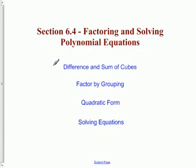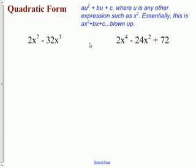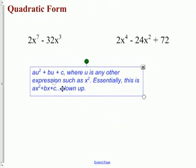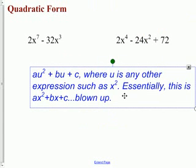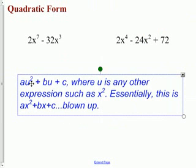In section 6.4 on factoring and solving polynomial equations, the third factoring pattern that we look at is quadratic form. Let's make this a little larger so you can see. Quadratic form is of this general form AU squared plus BU plus C.